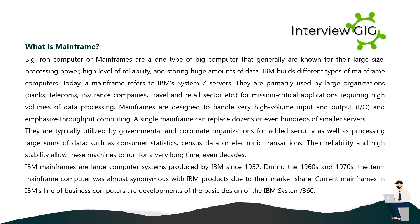What is a mainframe? Big iron computers, or mainframes, are a type of large computer generally known for their large size, processing power, high level of reliability, and storing huge amounts of data. IBM builds different types of mainframe computers. Today, a mainframe refers to IBM System Z servers. They are primarily used by large organizations — banks, telecoms, insurance companies, travel and retail sectors — for mission-critical applications requiring high volumes of data processing. Mainframes are designed to handle very high volume input and output (I/O) and emphasize throughput computing. A single mainframe can replace dozens or even hundreds of smaller servers.